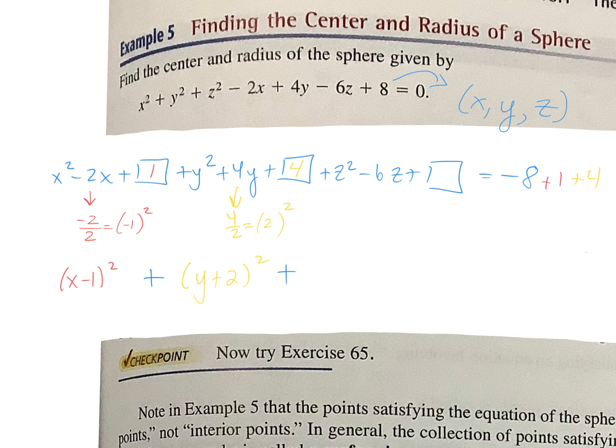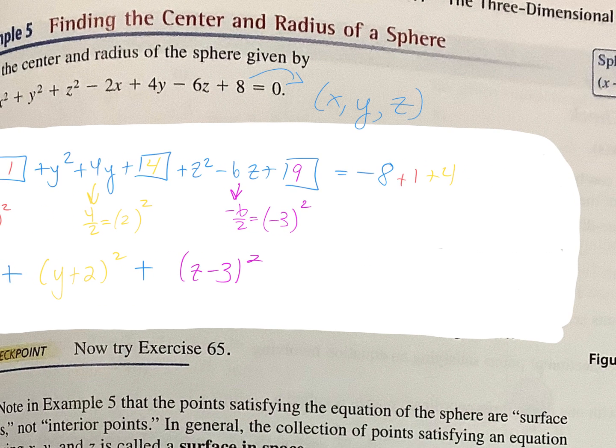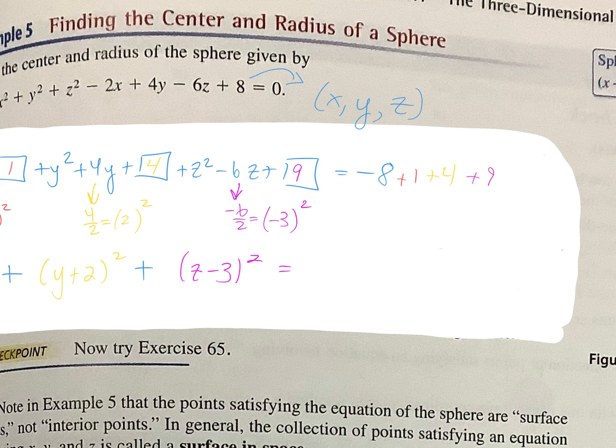Now I have a big plus sign, and we're going to do the same thing but with our Z. I'm going to take my B term, which is negative 6, and divide it by 2. What do I get? Negative 3. So my parenthesis is Z minus 3 squared. Now when we square negative 3, what do we get? 9. So I'm going to add 9 to both sides. Perfect. Let's add. What's negative 8 plus 1? Negative 7. Negative 7 plus 4. Negative 3 plus 9. Equals 6.